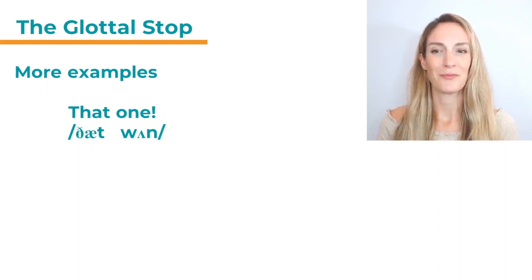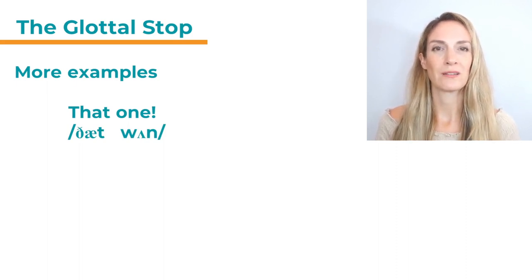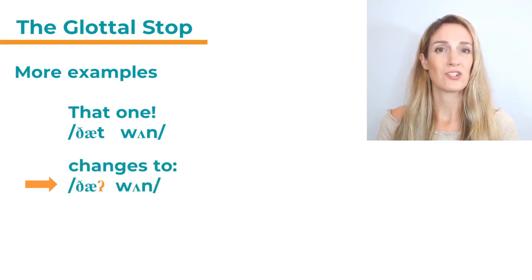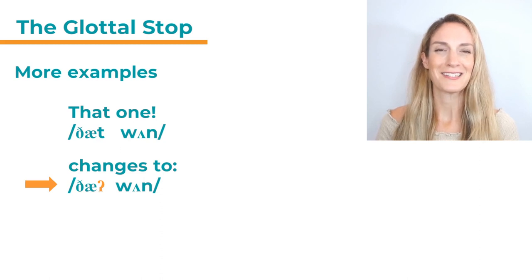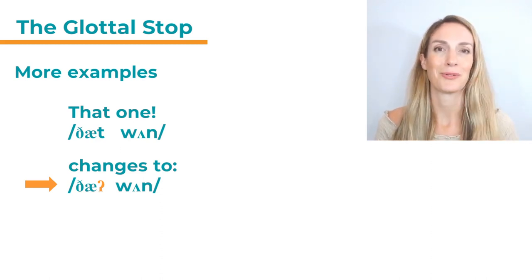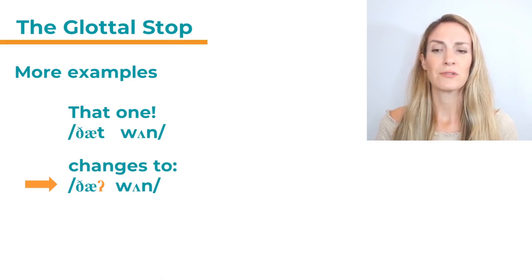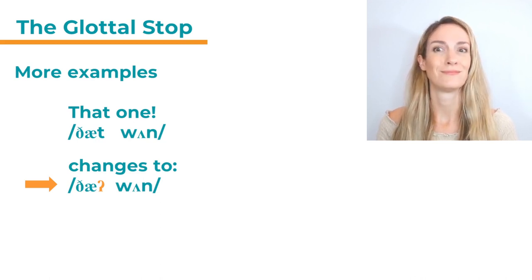Here is another example: 'that one'. It obviously ends in T, and then W is a labial consonant. So 'that one' can also change to 'that one' — there's a glottal stop in between. If you find it difficult to hear, it helps to remove the sound entirely, because then it sounds really wrong. If I were to say 'that one' with no stop — no, that sounds strange. 'That one' — glottal stop.